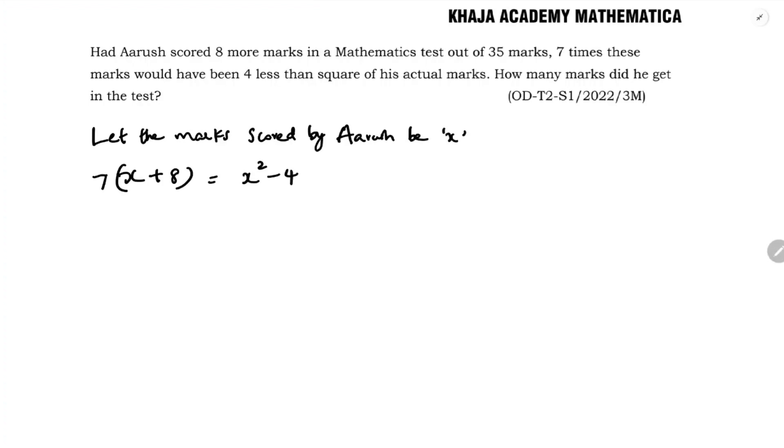4 less than square of his actual marks. Now what about this 35? He got x out of 35, so you can write (x+8) out of 35. 7 times this marks out of 35 is 4 marks less than its square out of 35, so 35 and 35 cancel.